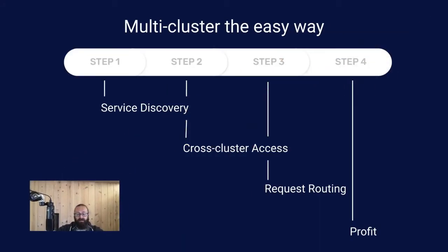Let's talk about what we're going to go over. To do multicluster the easy way, you really need four separate things: you need to understand how service discovery works and be able to discover services across clusters; you need cross-cluster access to get requests from one cluster to the other; you need to route requests in an intelligent fashion; and my favorite part of multicluster the easy way is profit.